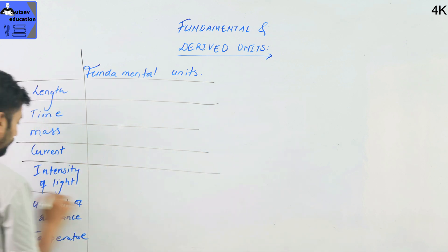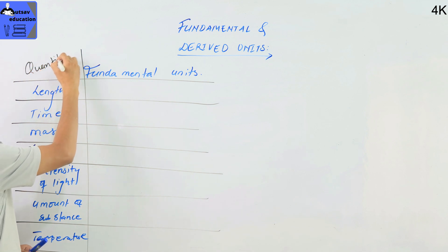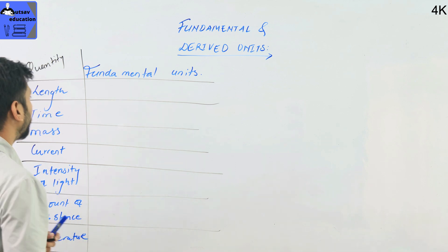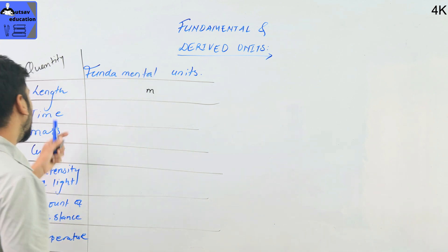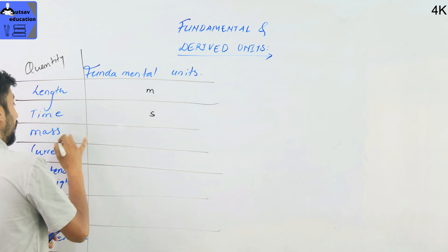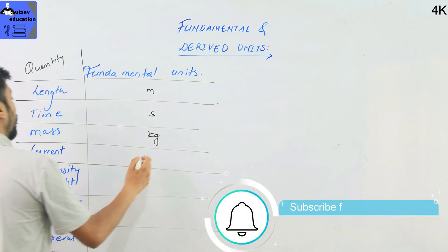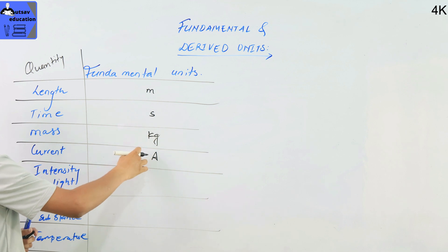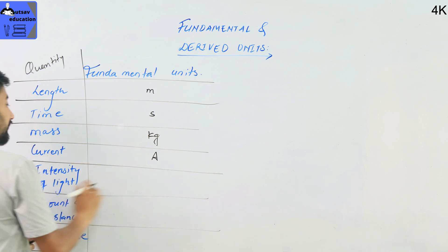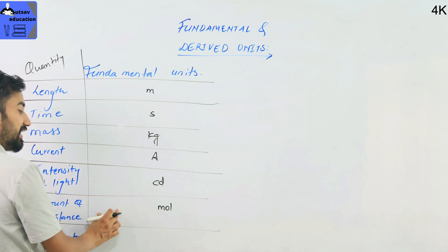Let's see the fundamental quantities and their units. The quantity is length — the unit is meter, denoted as m. The time unit is second, denoted as s. Mass is kilogram, kg. Current — what is the current? Current is ampere, symbol A. Intensity of light is candela, symbol cd. Amount of substance is mole, symbol mol.